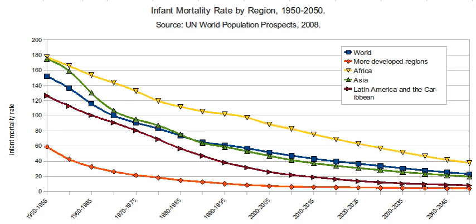The reported IMR provides one statistic which reflects the standard of living in each nation, and changes in the infant mortality rate reflect social and technical capacities of a nation's population. The World Health Organization defines a live birth as any infant born demonstrating independent signs of life, including breathing, heartbeat, umbilical cord pulsation, or definite movement of voluntary muscles. This definition is used in Austria and Germany, though Germany does not consider muscle movement to be a sign of life.